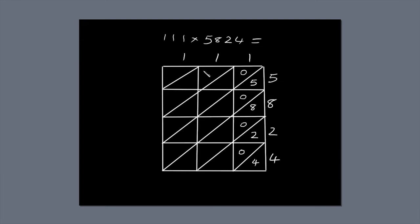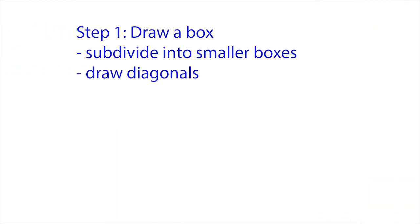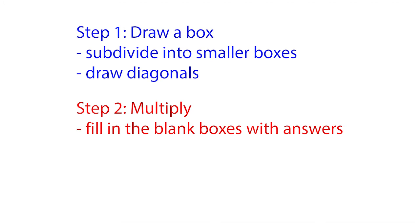Now, I've just noticed that the other two columns also involve multiplying 1 by the same set of numbers, so the answers are going to be exactly the same. So we can just copy our answers over. That's step 2. Multiply and fill in the blanks with your answers.